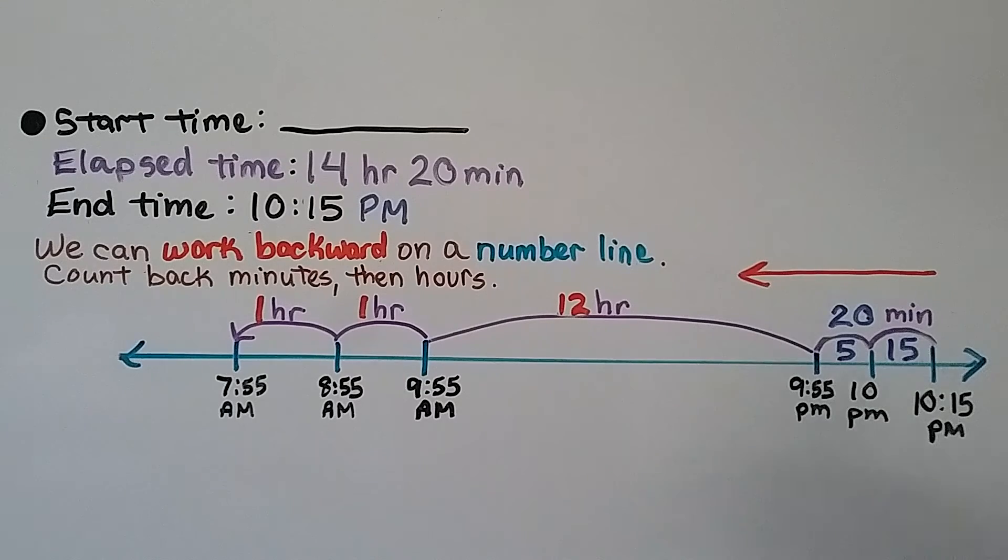Here we're missing the start time, but it's giving us the elapsed time, the time that passed, and the end time of 10:15 PM. We can work backward on a number line. We count back minutes, then hours.